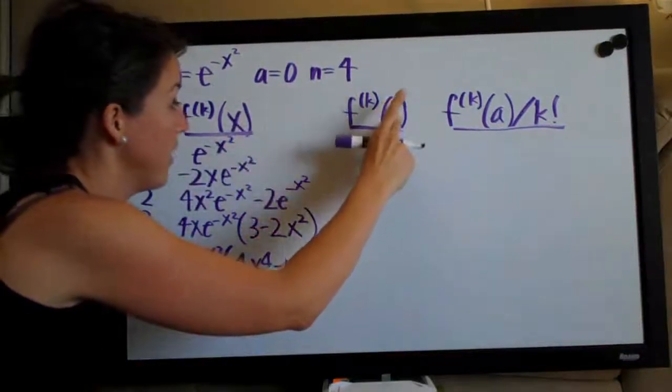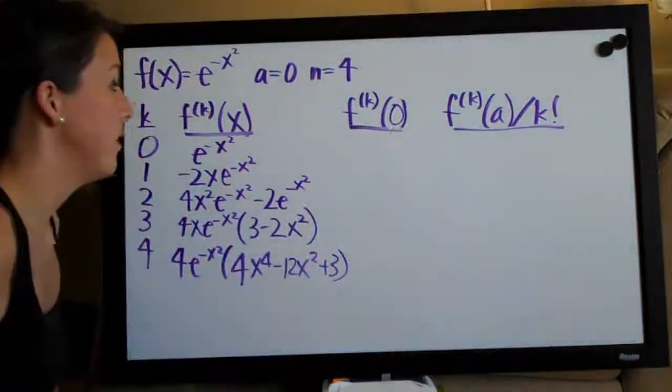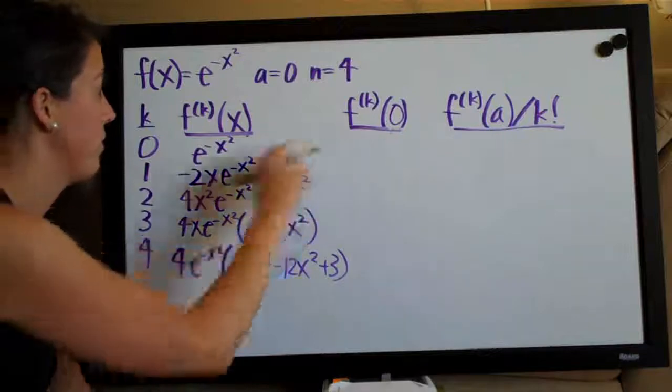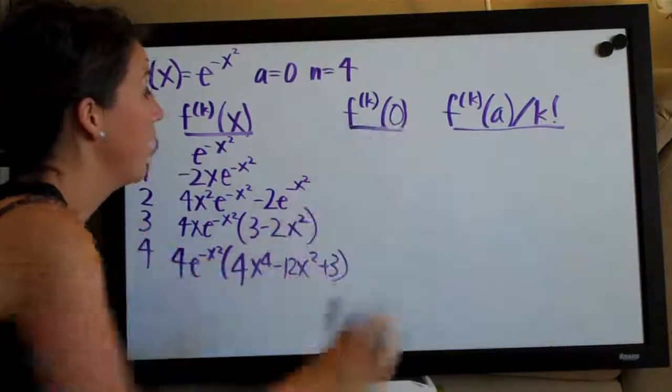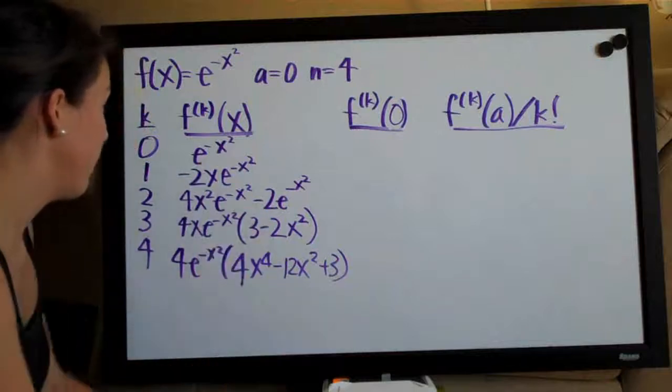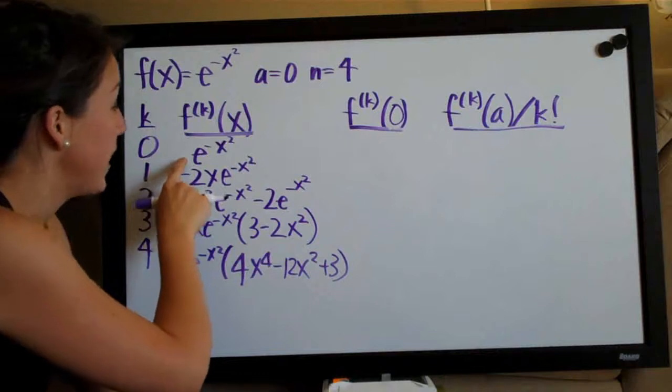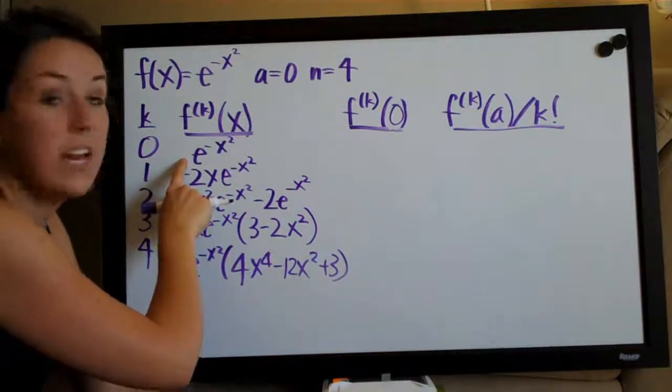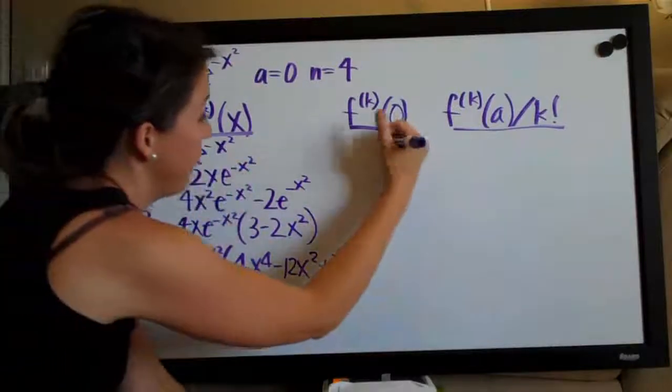So this is actually f^(k) of zero, which basically means whatever you get when you plug zero into the function. So, we will go ahead and plug zero into each one of these. Let's go ahead and do that now. This will be e to the zero, right? Anything raised to the zero power is one. So, e to the zero would just be one.